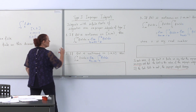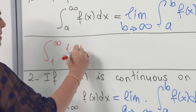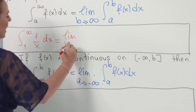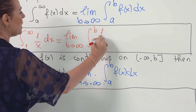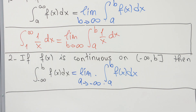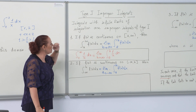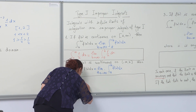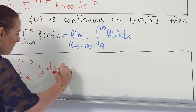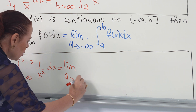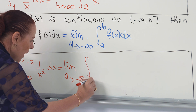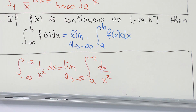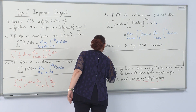Let me give you quick examples. For the integral from 1 to infinity of 1 over x dx, this is a type 1 improper integral where the infinite limit is in the upper limit, so we define it as b goes to infinity of the integral from 1 to b of 1 over x dx. For the lower-limit case, we have the limit as a goes to minus infinity of the integral from a to minus 2 of dx over x squared.